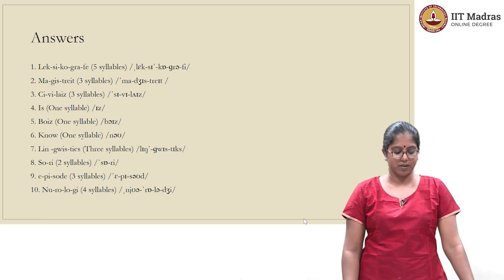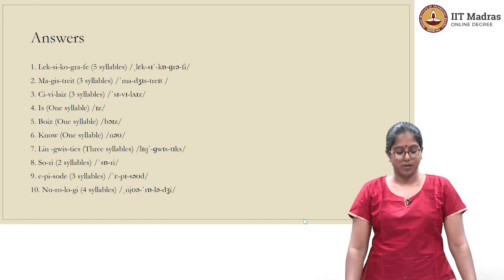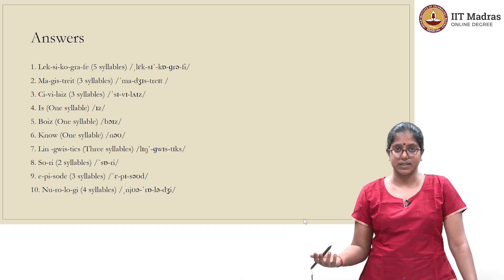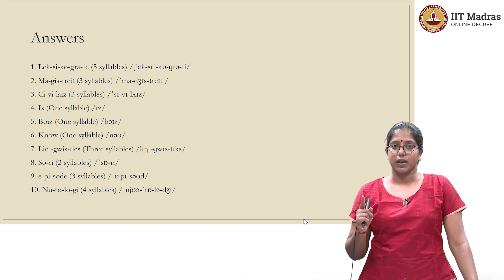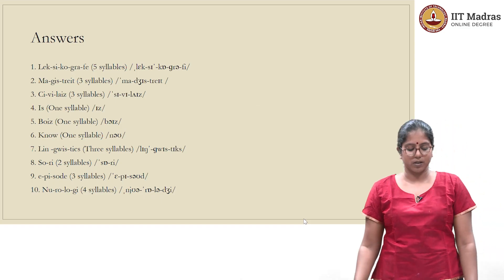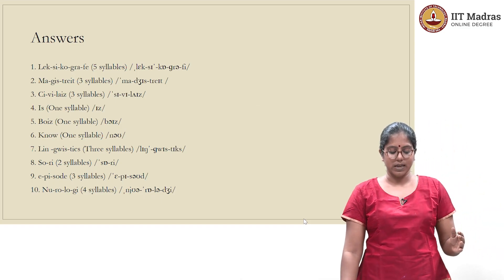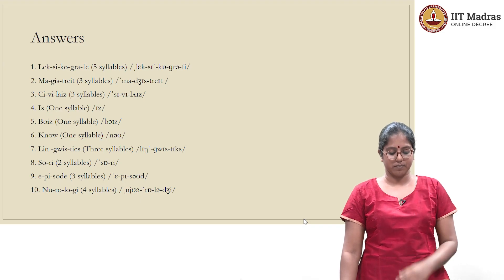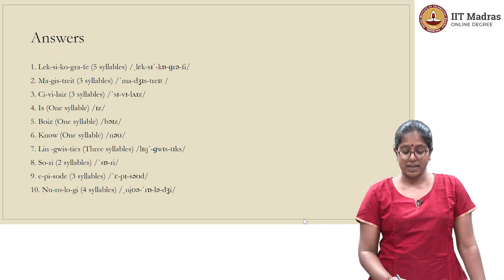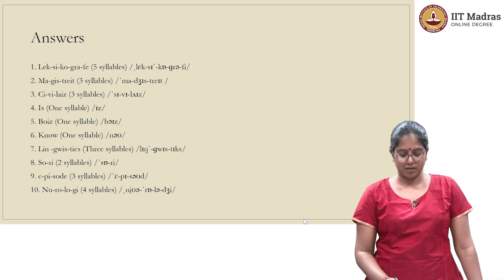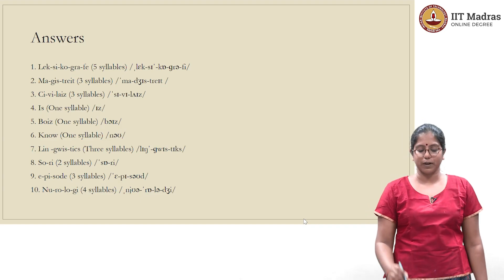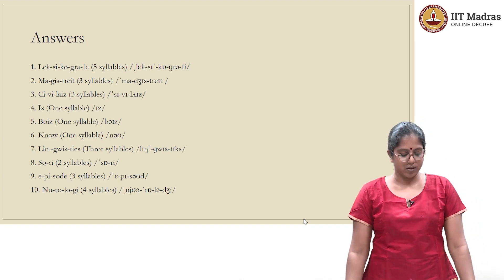Let us look at the answers now. Lexicographer — you are going to split it according to vowels, looking at the number of vowels in each syllable. You are supposed to have only one vowel in a syllable. So how do you split lexicographer? Lek-si-co-gra-fi. The vowels are: lek has 'a', si has 'e', co has 'a', gra has 'a', fi has 'e'. So it is a five-syllabled word.